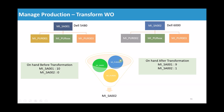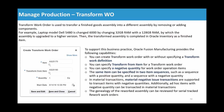When the work order is completed, MI_SA_001 on-hand will be reduced from 10 to 9 and MI_SA_002 will be increased by one quantity. For the purchased items, MI_PUR_002 on-hand will be reduced by one quantity, and MI_PUR_001 on-hand will be increased by one quantity.